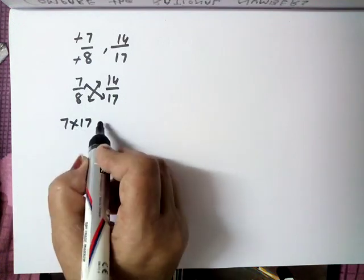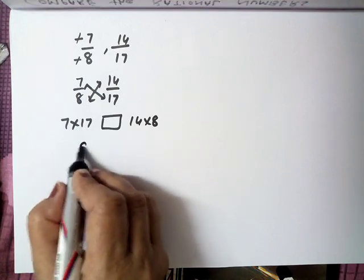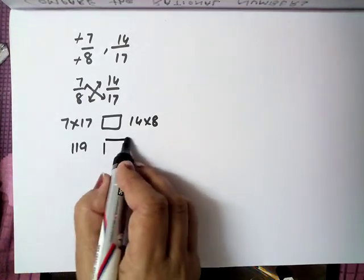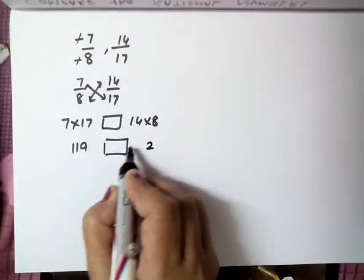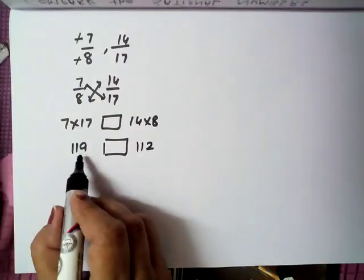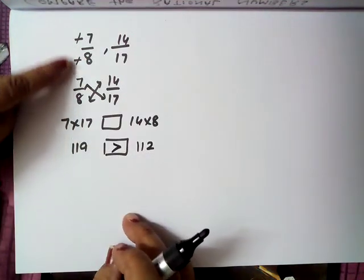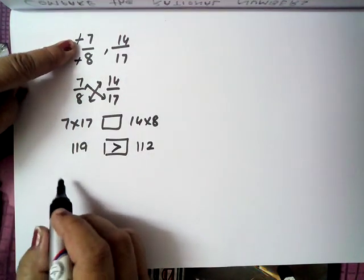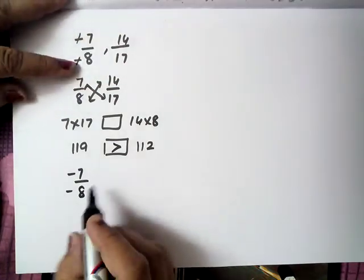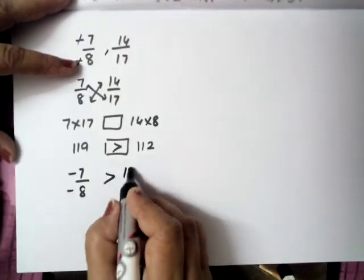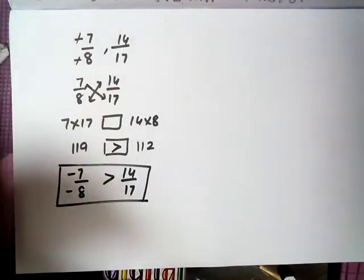7 into 17 aur 14 into 8. Ab isko multiply karte hain — that is 119, aur yeh ban jayega 112. Now both are positive, seedha hi pata chal raha hai yeh greater hai. Toh is side ka aapka jo rational number hai — fraction nahi — kyunki fraction is always positive, aur jo rational numbers hote hain, they may be positive, they may be negative. Toh yeh aapke paas answer ho jayega.